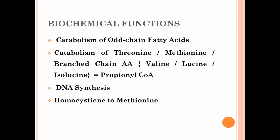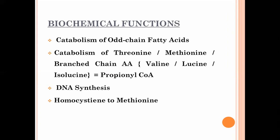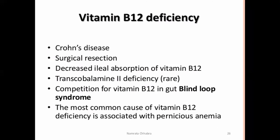The four important functions of vitamin B12 are: catabolism of odd-chain fatty acids; catabolism of threonine, methionine, and branched-chain amino acids (valine, leucine, isoleucine) producing propionyl-CoA; DNA synthesis; and conversion of homocysteine to methionine. Causes of vitamin B12 deficiency include Crohn's disease, surgical intestinal resection, decreased ileal absorption, transcobalamin-2 deficiency (very rare), competition in blind loop syndrome, and most commonly pernicious anemia.